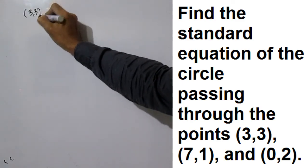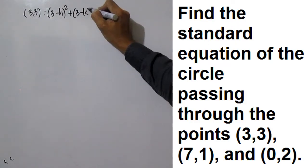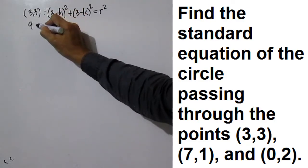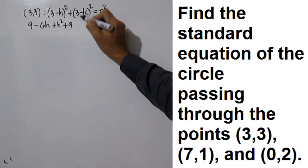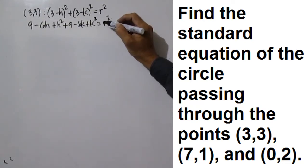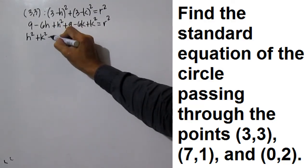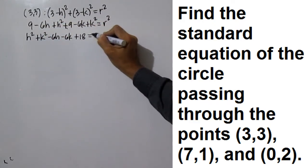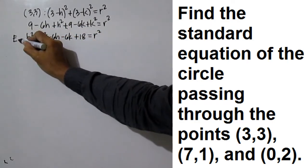For point (3, 3): (3 minus h) squared plus (3 minus k) squared is equal to r squared. Squaring the binomials: 9 minus 6h plus h squared plus 9 minus 6k plus k squared equals r squared. Simplified: h squared plus k squared minus 6h minus 6k plus 18 equals r squared. This is equation 1.